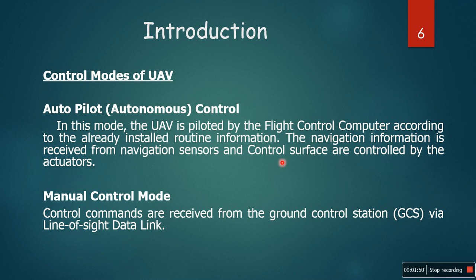Navigation information is received from navigation sensors, and control surfaces are controlled by the actuators. In manual control mode, control commands are received from the ground control station via a line-of-sight data link.